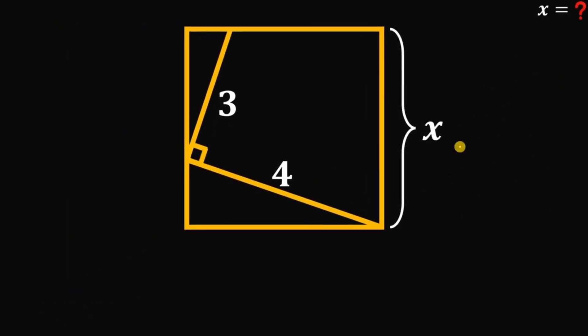Alright, so given this figure, our goal is to find the value of x or the side length of this square. One thing to notice here is we have two similar triangles.